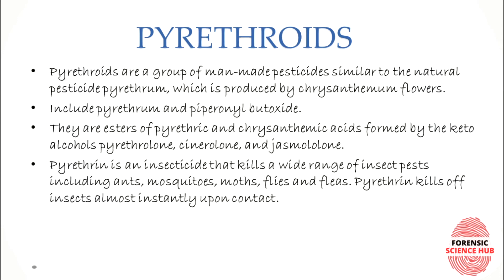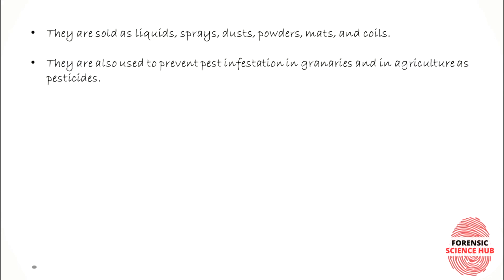Pyrethroids are esters of pyrethric and chrysanthemum acid, formed by the keto alcohols pyrethrolone, cinerolone, and jasmolone. Pyrethrin is an insecticide that kills a variety of insect pests including ants, mosquitoes, moths, flies, and fleas. They knock out insects almost instantly upon contact.